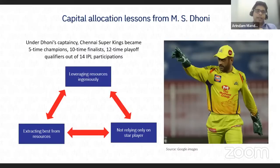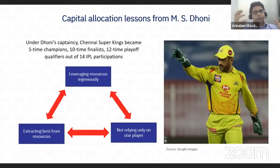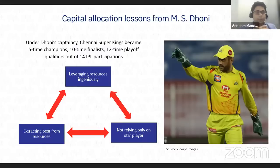See what Dhoni did with that — 16 years later, they participated in 14 of those seasons: five-time champions, ten times finalists, twelve-time playoffs. I couldn't really think of a better example. You have this limitation on resources, you have to operate within those, but at the same time create the best value. In cricket the basics are simple — batting, bowling, and fielding. How do you optimize your resources around those three pillars and get the best value? That's exactly what CSK achieved.